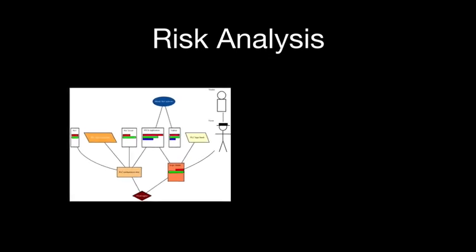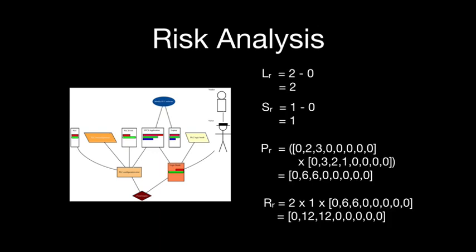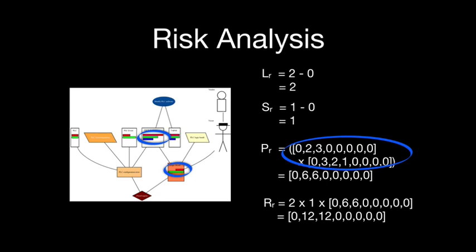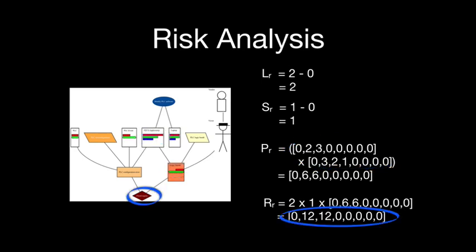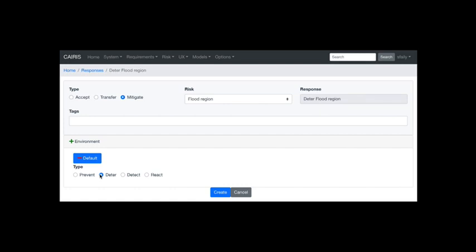Once all this information is added, the risk analysis model updates. We have a threat likelihood of 2 (fairly dark shading) and vulnerability severity of 1 (lighter shade). Threat impact is based on the SCADA application's security properties and the attacker's properties of interest for the logic bomb threat. The risk score multiplies likelihood, severity, and threat impact, yielding approximately 10.